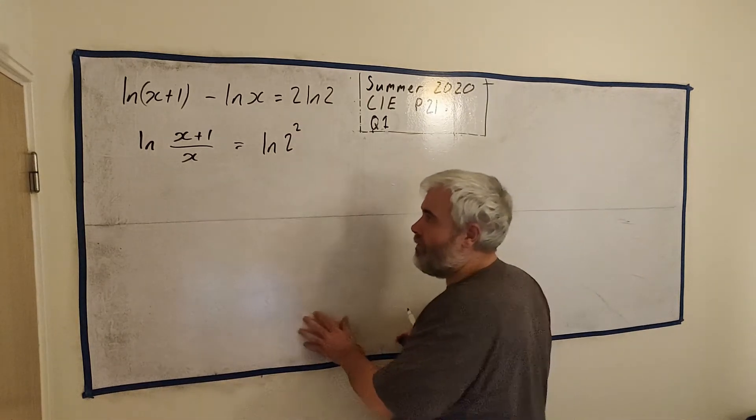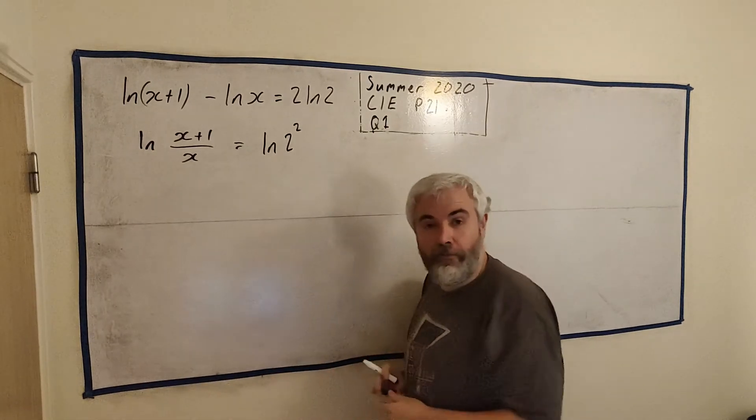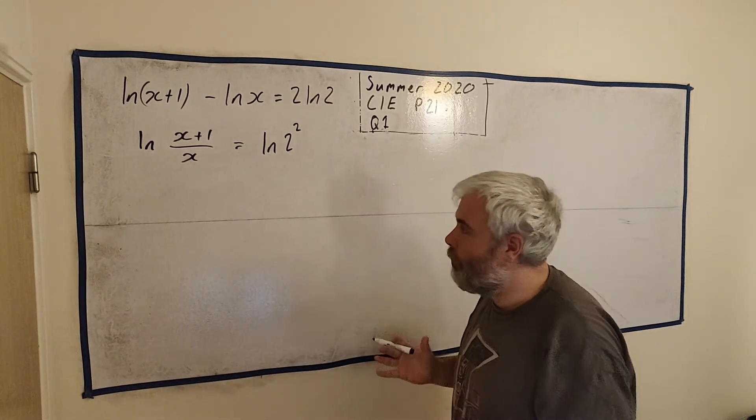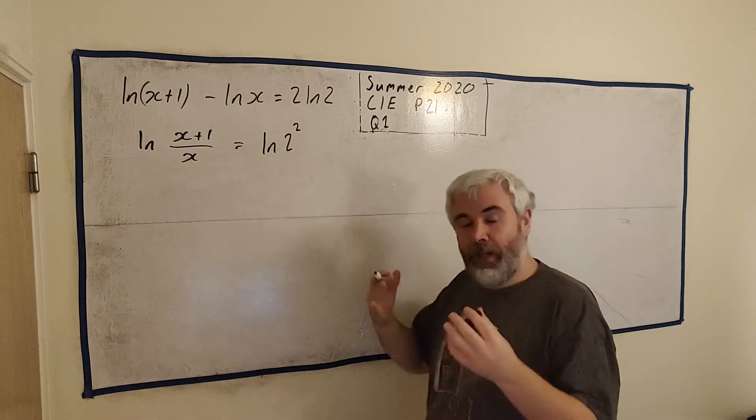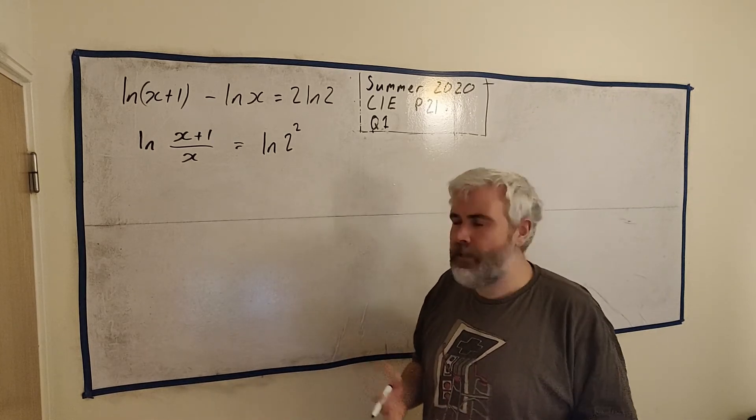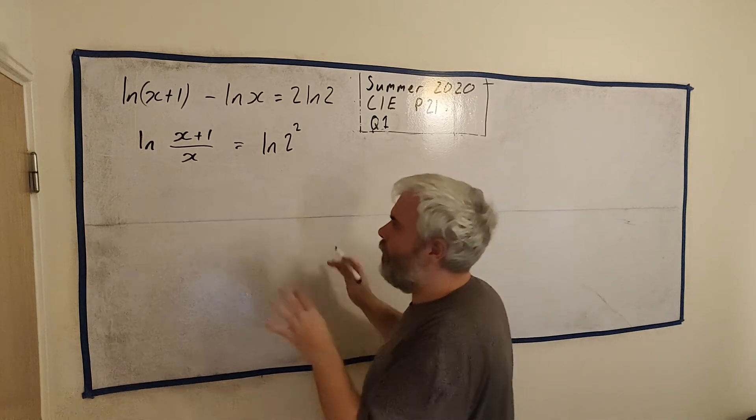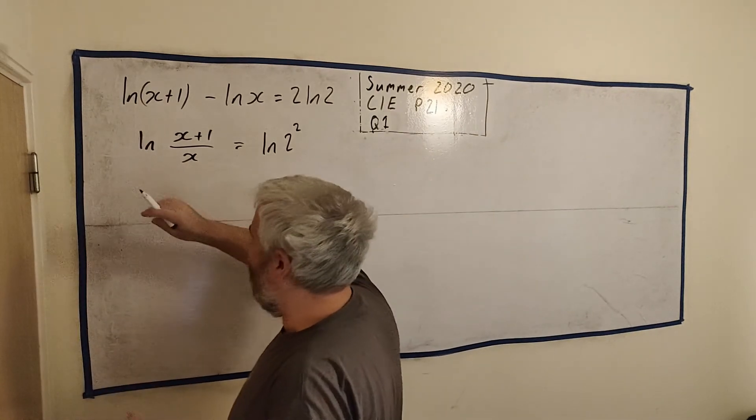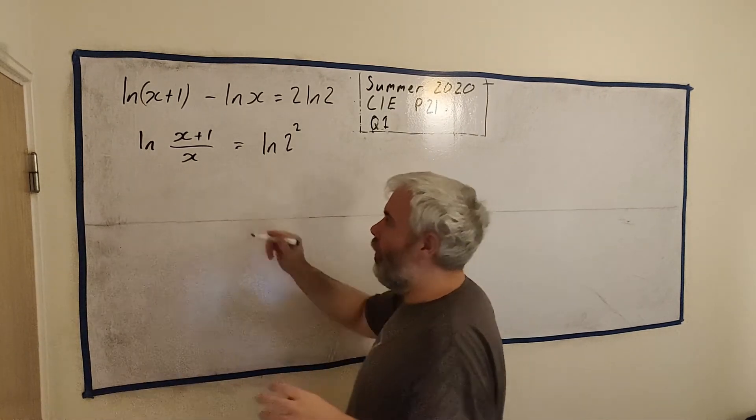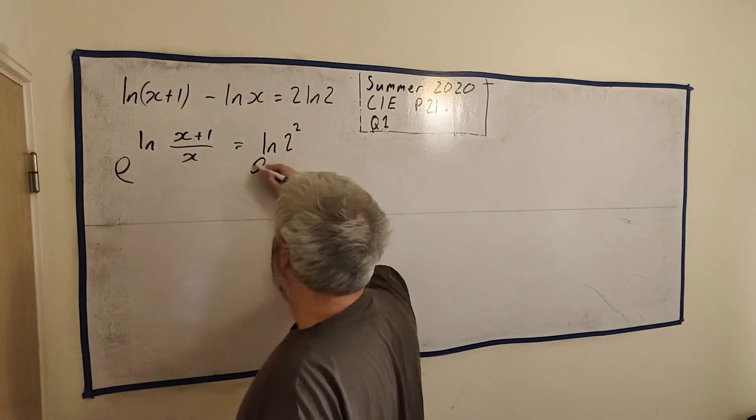Now the great advantage is we now just have a natural log in front of both of them. How do we get rid of that? We can multiply both sides, we can add both sides, but we can also put both sides as the power of e. So that's what I'm going to do to both sides.